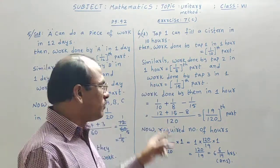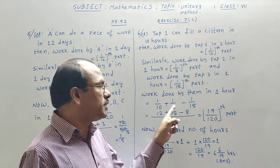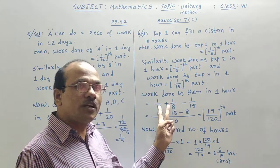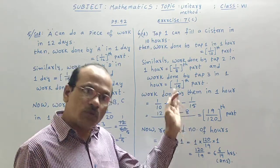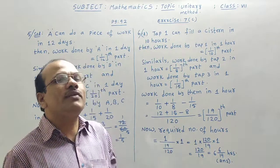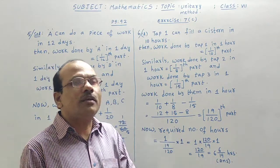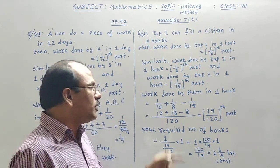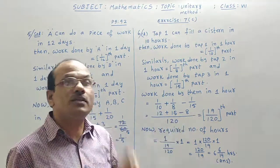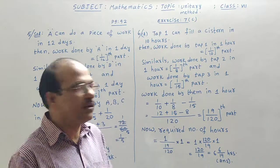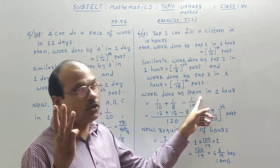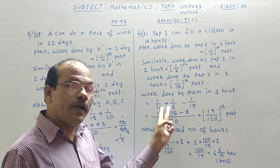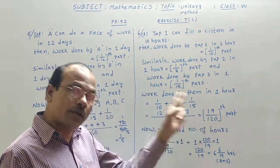Am I correct? So the first tap ability should add with the second tap ability. Then from that both results, the third tap ability should be subtracted. Then we will get when they start together. When the three are opened, all the three. Then in one hour of time, how much part is going to be filled will be identified. Work done by them. Them means all the three taps. In one hour of time. So, first two should be added, third one should be subtracted from the result.